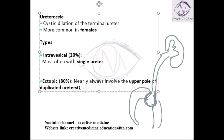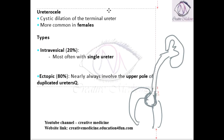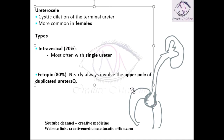Intravesical ureterocele, as the name suggests, is present inside the urinary bladder. This is an intravesical ureterocele — it is present inside the urinary bladder and is associated with a single ureter.